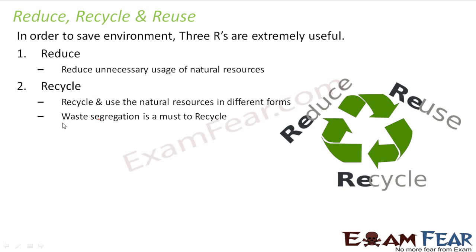For recycling to happen, waste segregation is a must. Waste segregation means different types of waste should be collected in different containers. For example, you have vegetable waste from the kitchen, wet liquid waste, and waste like plastics. If you throw everything together in the same dustbin, those plastics will not be in good enough condition to be recycled.